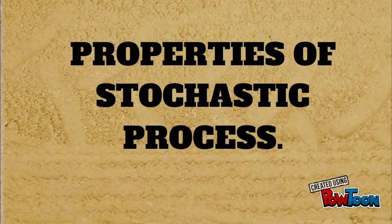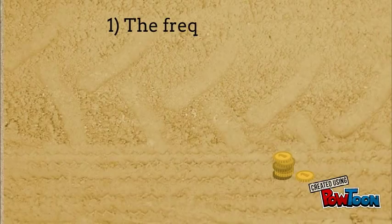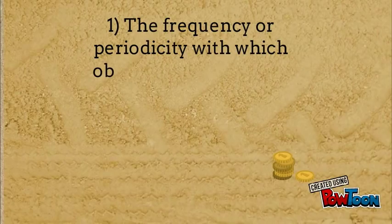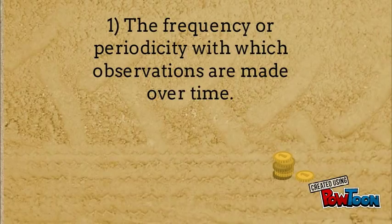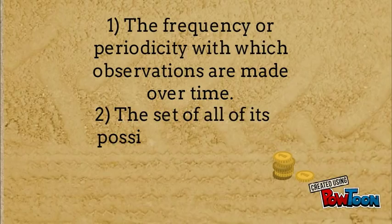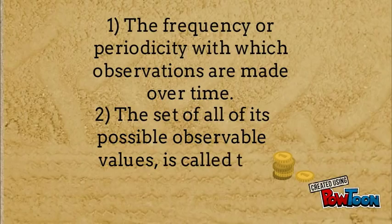Properties of a stochastic process: first, the frequency or periodicity with which observations are made over time; second, the set of all possible observable values is called the state space.